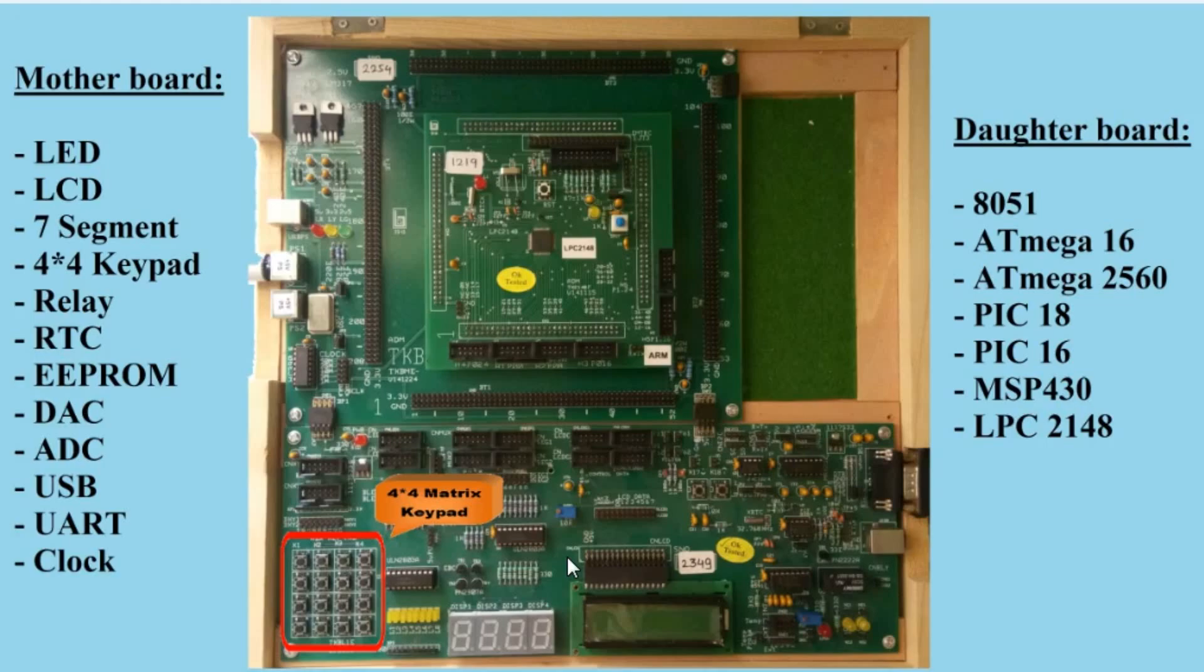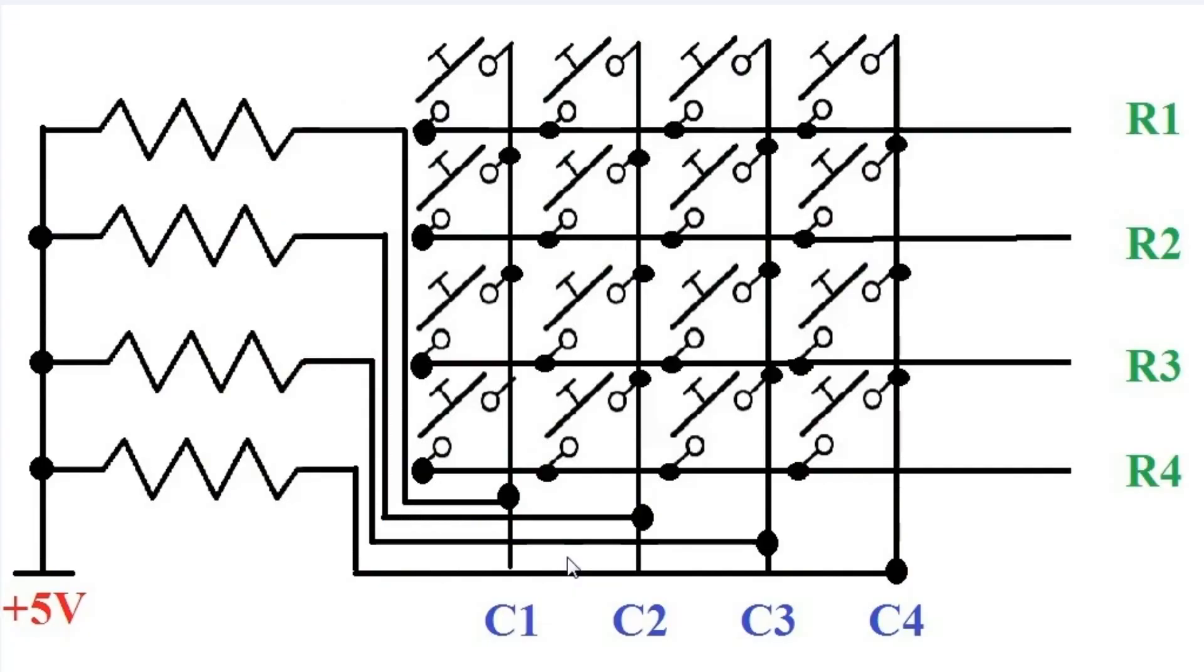Let's have a look at the inside circuit of 4x4 matrix keypad. This is the circuit for 4x4 matrix keypad in which 4x4, that means total 16 number of keys, pushbutton switches are used and 4 plus 4, i.e. 8 lines are used to interface 4x4 matrix keypad with microcontroller from which R1 to R4 are for rows and C1 to C4 are for columns.